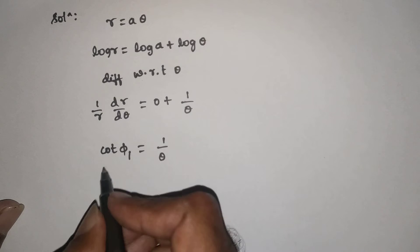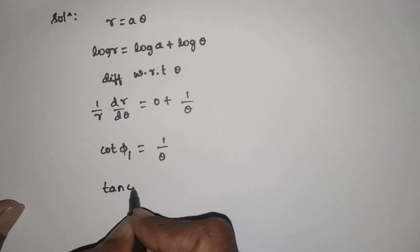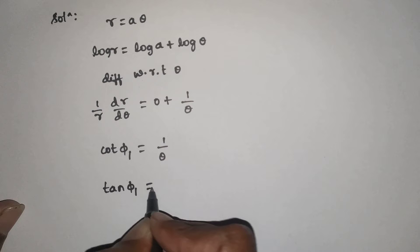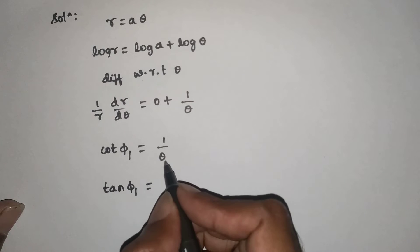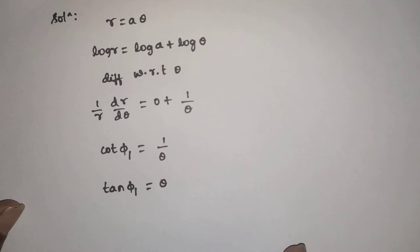Using the formula for tan φ, we get tan φ₁ is equal to θ. This is the reciprocal relationship applied to the formula.